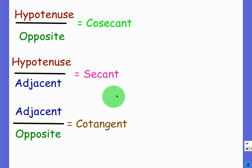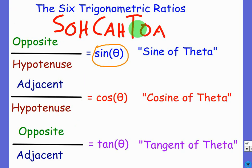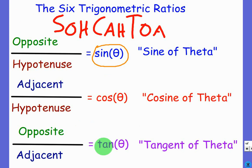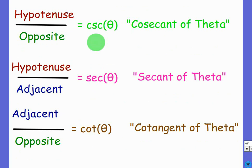Instead of writing all these big words out, we can just use abbreviations. Sine is written as sin — it's not 'sin,' you still say 'sine.' Cosine is written as cos. Tangent is written as tan. For the reciprocal functions: cosecant is csc, secant is sec, and cotangent is cot.